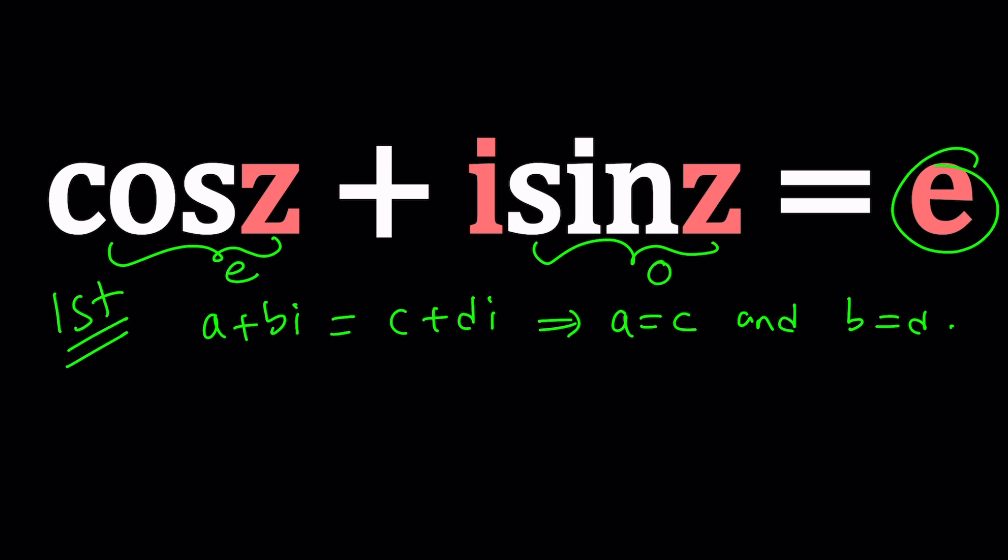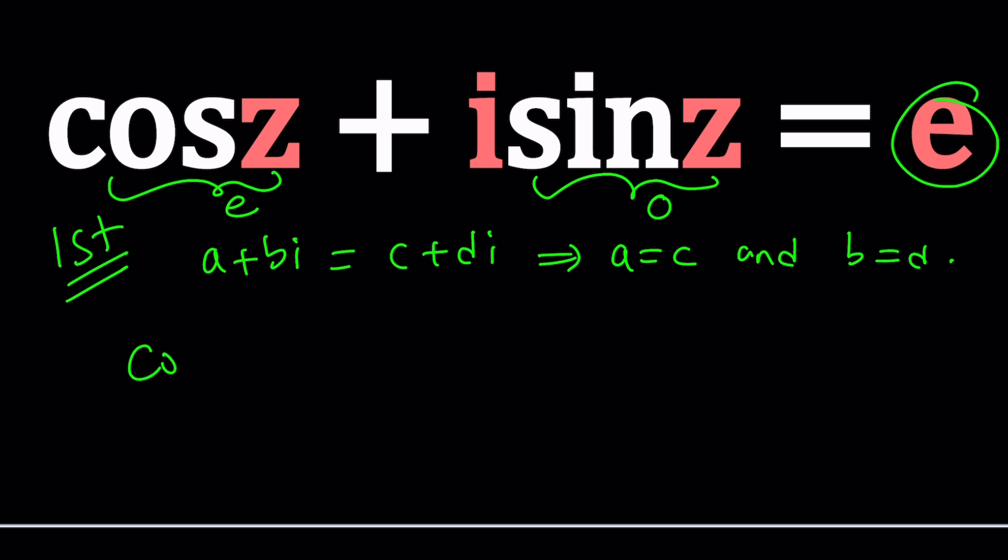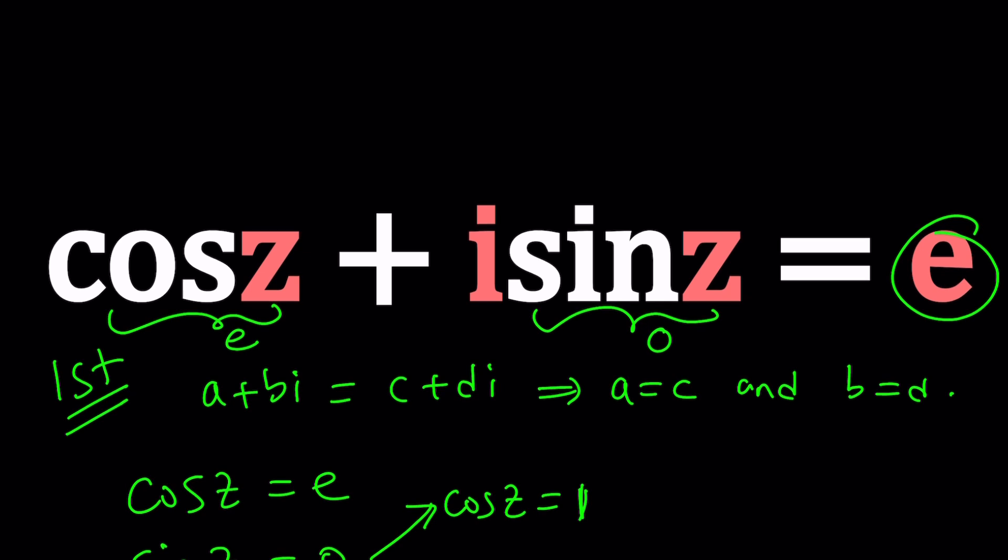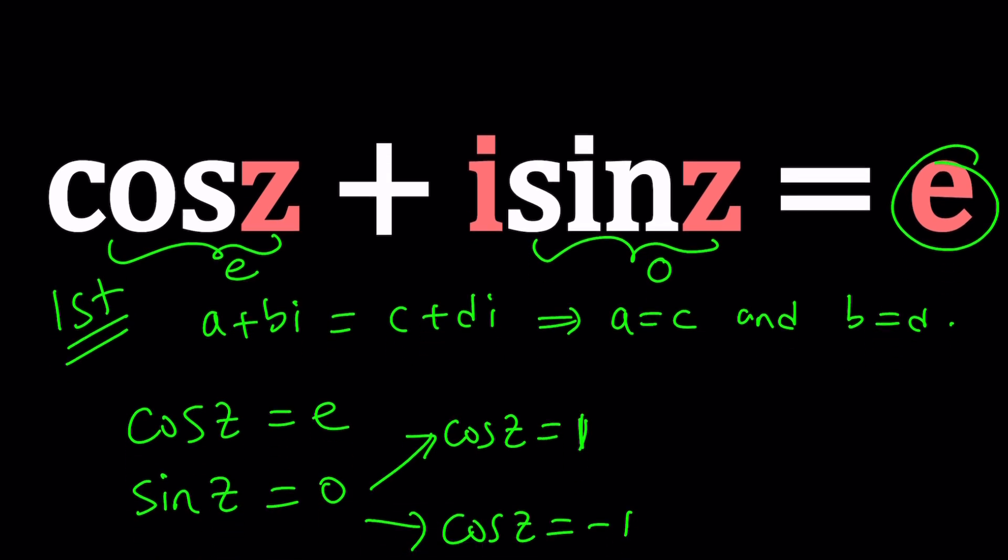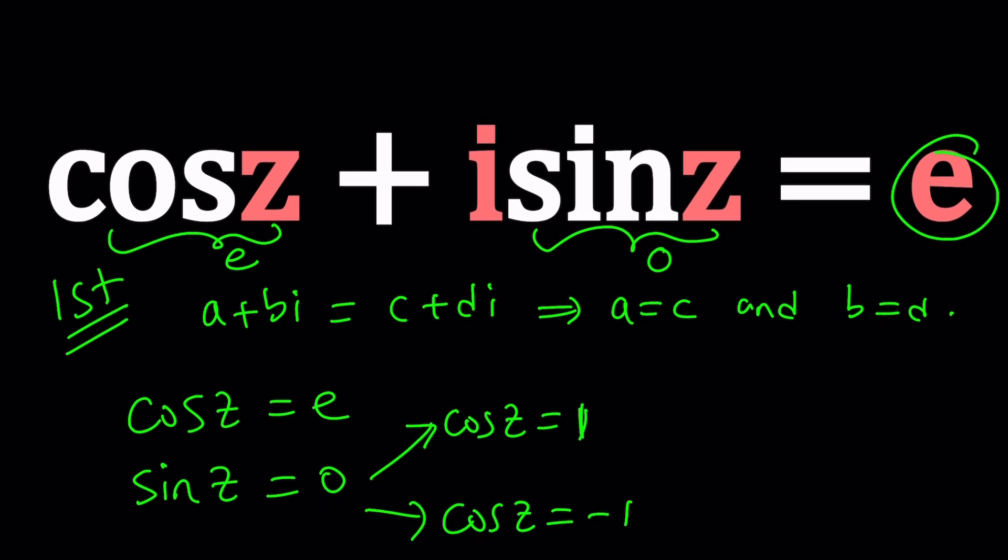From here we get a system of equations: cosine z equals e and sine z equals zero. But if sine z is zero then cosine z is either one or negative one because we have the famous equation sine squared z plus cosine squared z equals one, even though z is complex. Wait a minute, did you say z is complex? Well here's the trick: we don't have a solution for this system because z is not real.